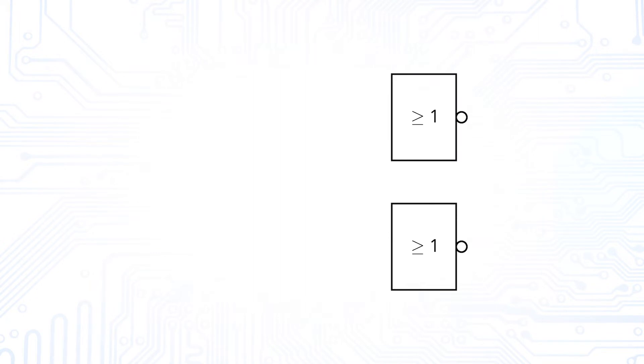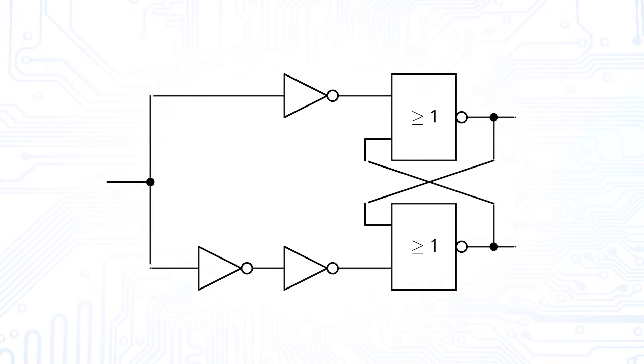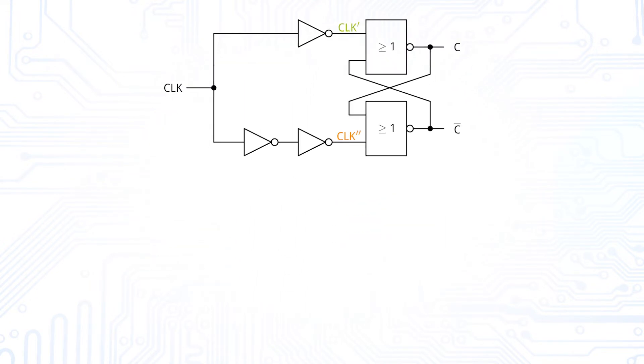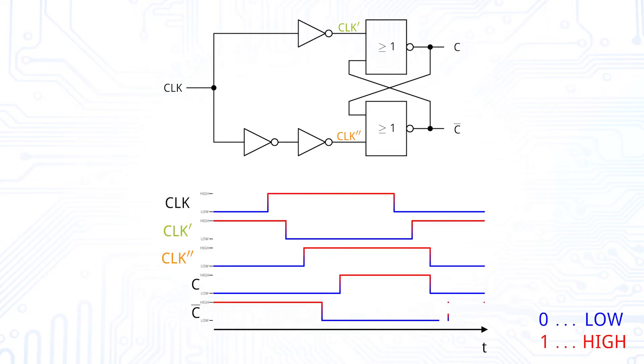With the use of a few inverters and an SR latch, we can create a non-overlapping clock signal for a master-slave D flip-flop to avoid a simultaneous transparent state of master and slave.